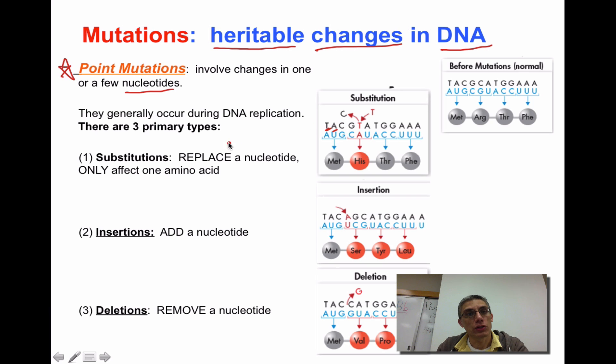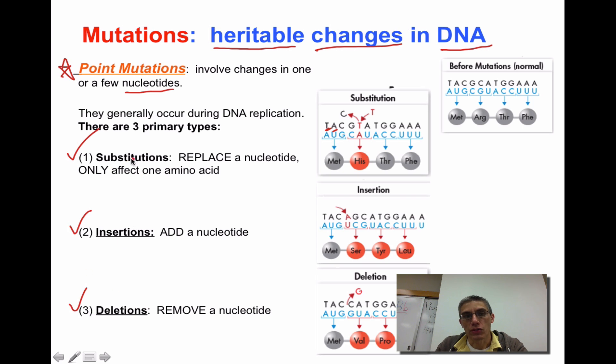When you talk about mutations that only involve one or a few nucleotides, we typically call them point mutations, because they only occur on a relatively small piece of that genetic material. We break point mutations down into three primary types: substitution, insertion, and deletion.